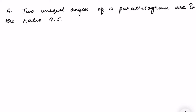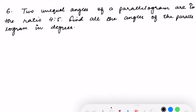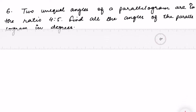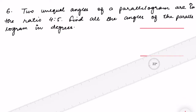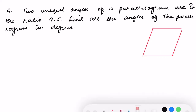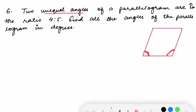We are doing Exercise 6.3, Question 6. The question says: there is a parallelogram and two unequal angles of a parallelogram are in the ratio 4 is to 5. Find all the angles of the parallelogram. Let me just draw a diagram to help understand — this is a parallelogram, and these two unequal angles are less than 90 and greater than 90 respectively.